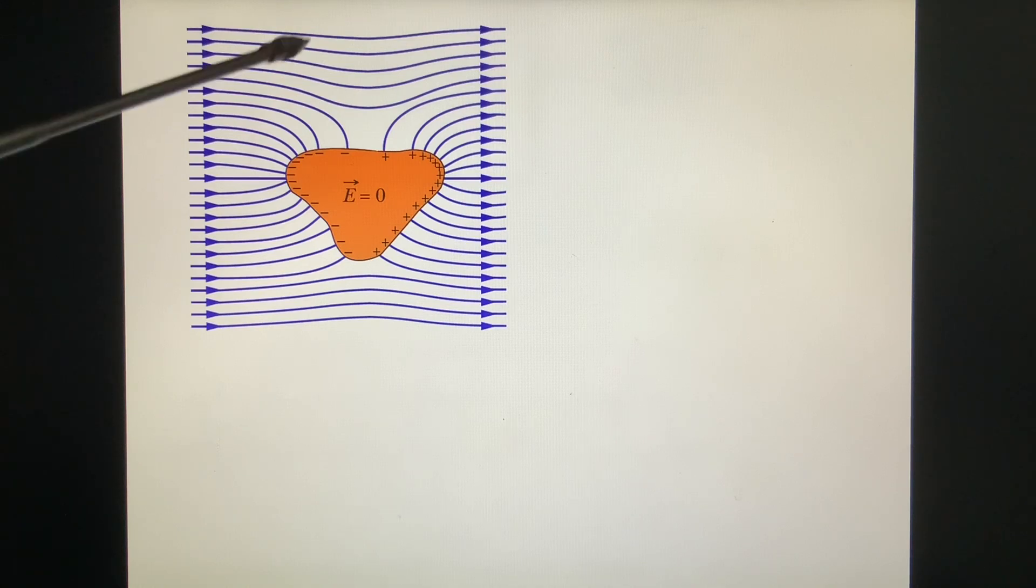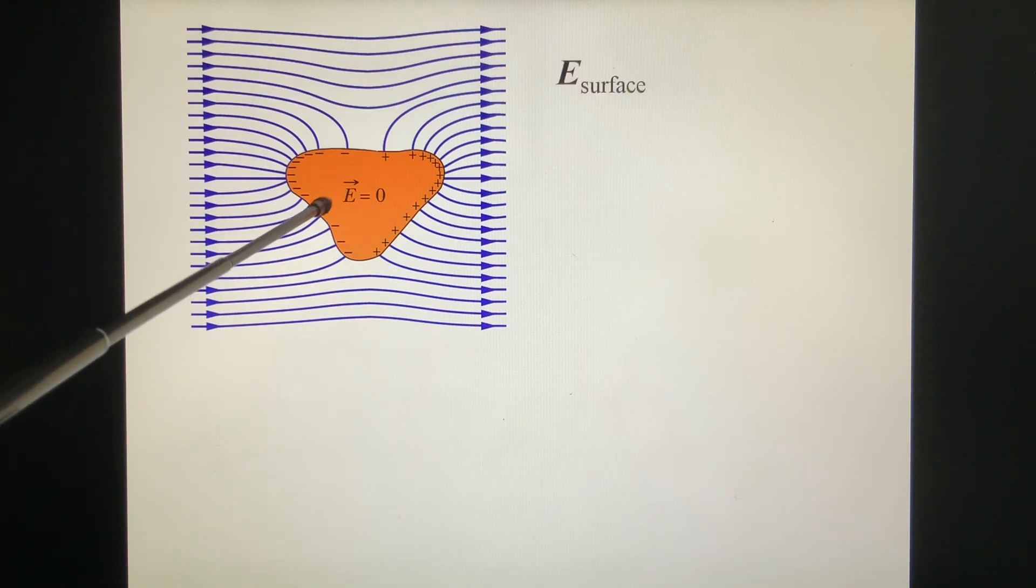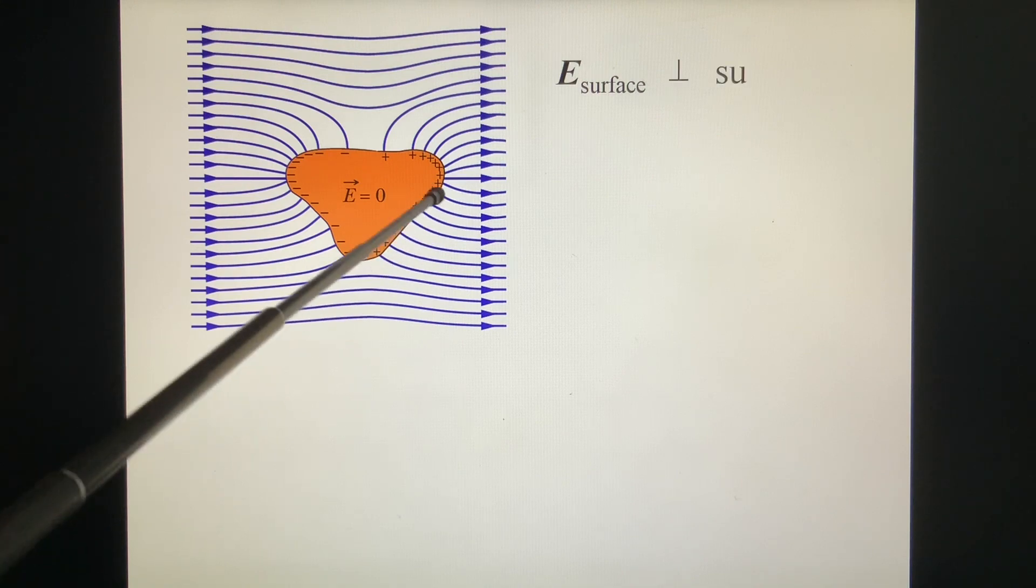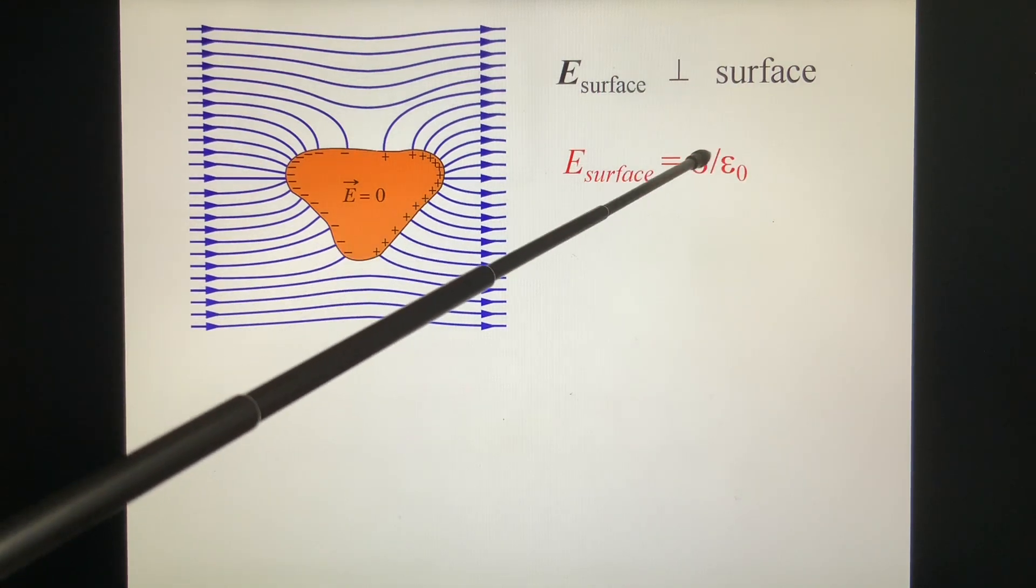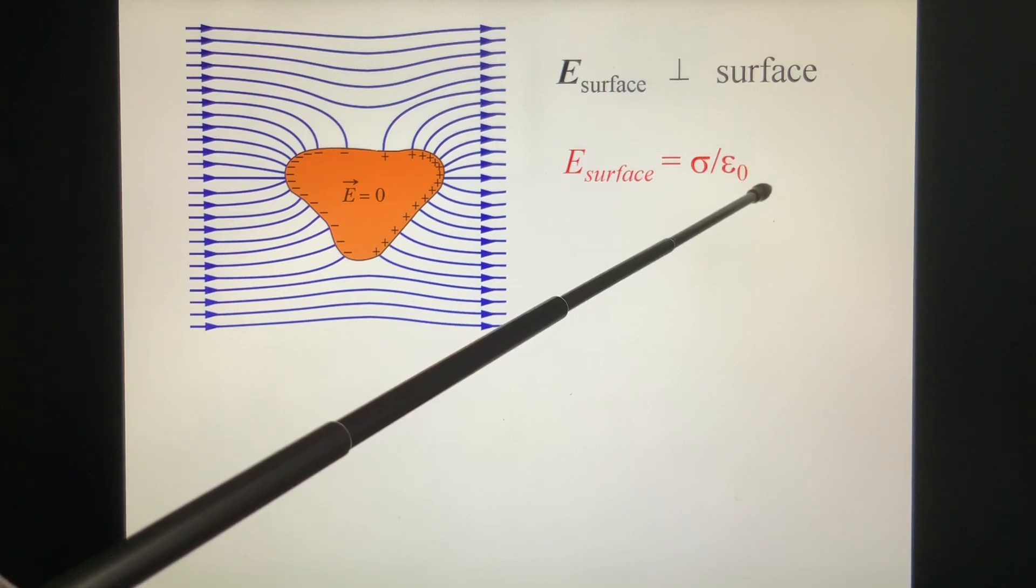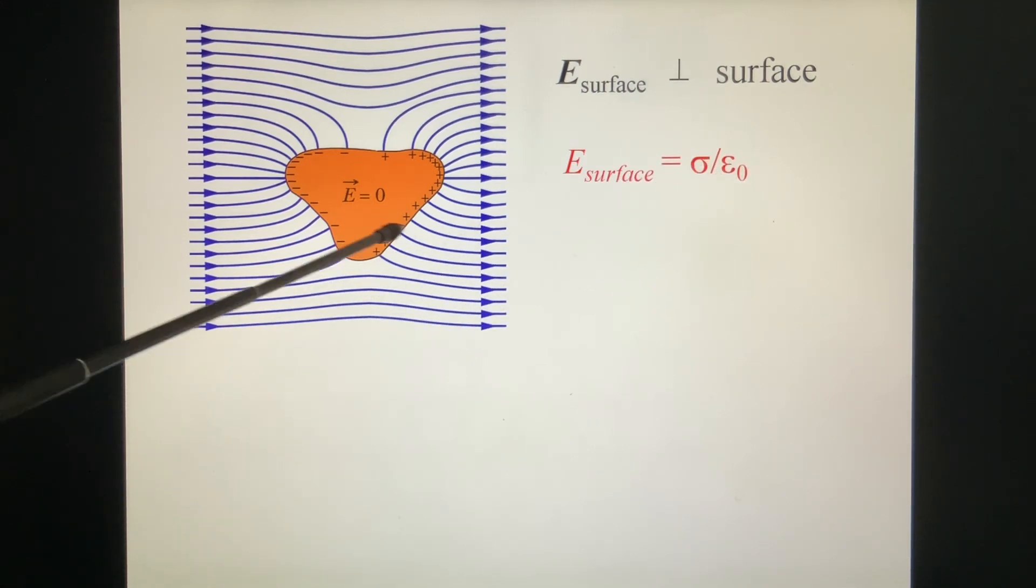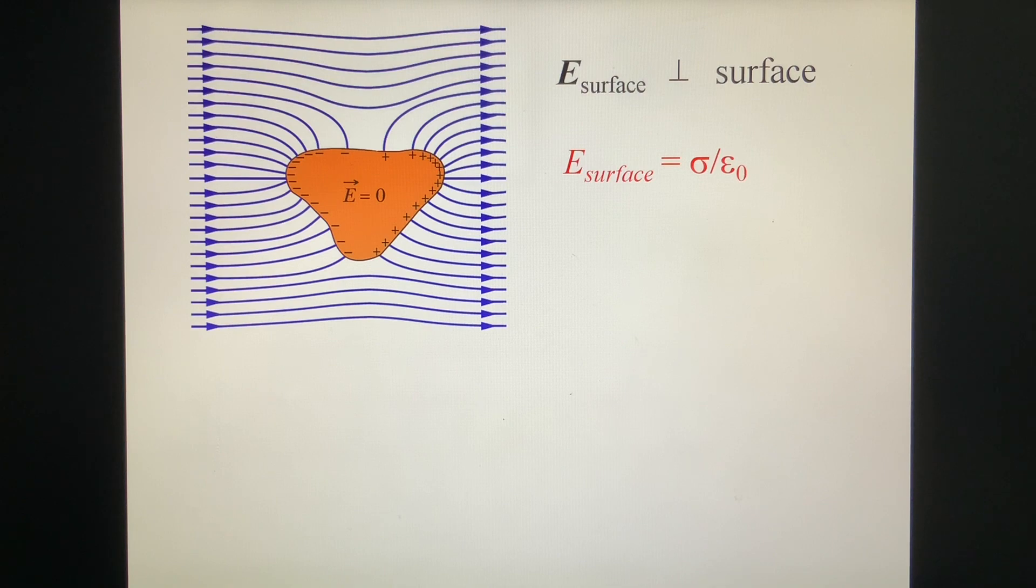This is an isolated conductor in an external field. E inside is zero. E surface is perpendicular to the surface. Look at this. And the magnitude equals sigma over epsilon zero. Sigma is the charge density. The different place is different. It's not uniform.